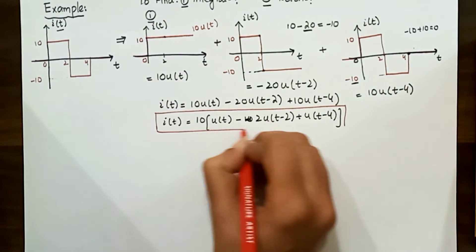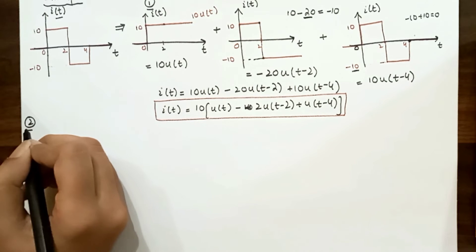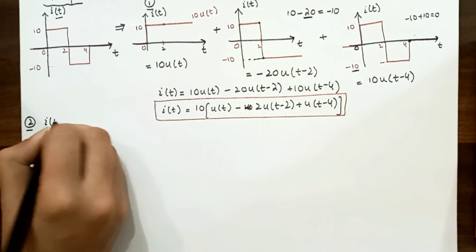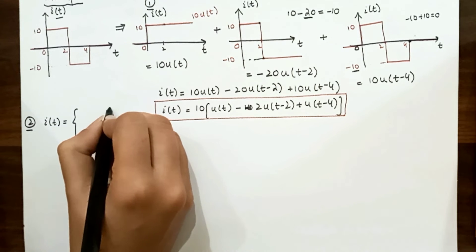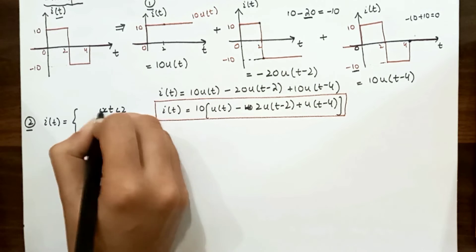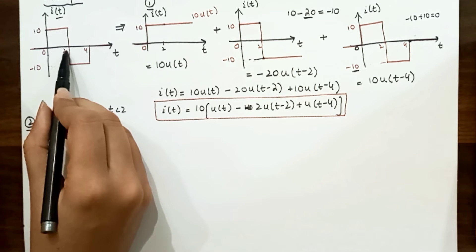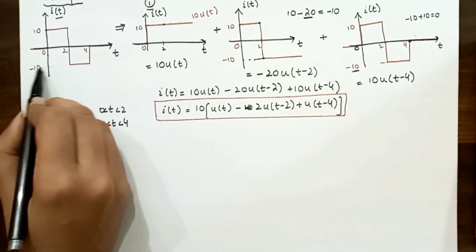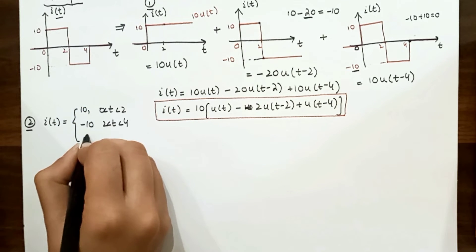We now need to sketch and take the integral of the current i(t) we just found. We can write the value of current for three cases: for t between 0 and 2, i(t) = 10; for t between 2 and 4, i(t) = −10; and for t greater than 4, i(t) = 0.